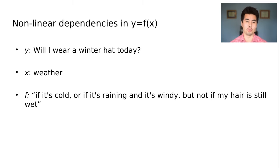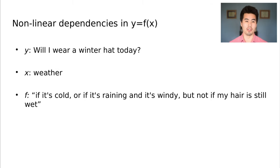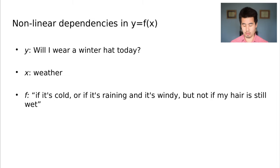An example here is: will I wear a winter hat today? If you're basing this just off of the weather, there could be some conditions that if they're true automatically make the answer yes. For example, if it's really cold, chances are I am. But there are also interacting terms — another thing that could push us into the 'yes' class is if it's raining and it's windy. So it's a three-way conditional: cold, or rainy and windy, with a NOT gate at the end. There are lots of different things that interact in non-trivial ways.